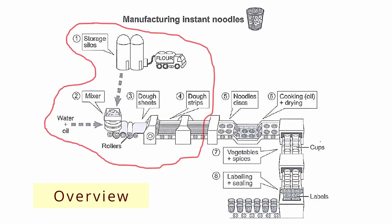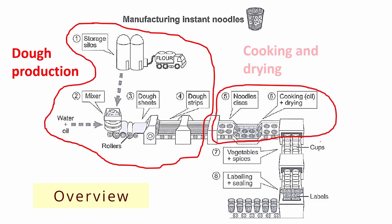So steps one, two, three, four, I grouped them as dough production. Steps five and six, I put them together as cooking and drying. And steps seven and eight, I put them together, I grouped them as packaging. So I'll mention this as well in my overview.